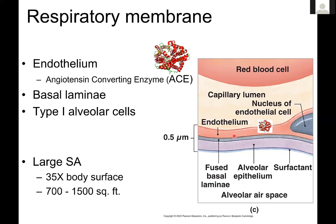All of this surface area together represents an extremely large surface area compared to your body surface — about 35 times your body surface area, varying with body size. Roughly 700 to 1,500 square feet — the size of a very small to okay-ish apartment — is crammed into your lungs. There's a humorous factoid that goes: 'Did you know that if you took all of your alveoli and laid them out on a flat surface, you'd die?' — pointing out the obvious that smearing your lungs across a tennis court wouldn't leave you alive.